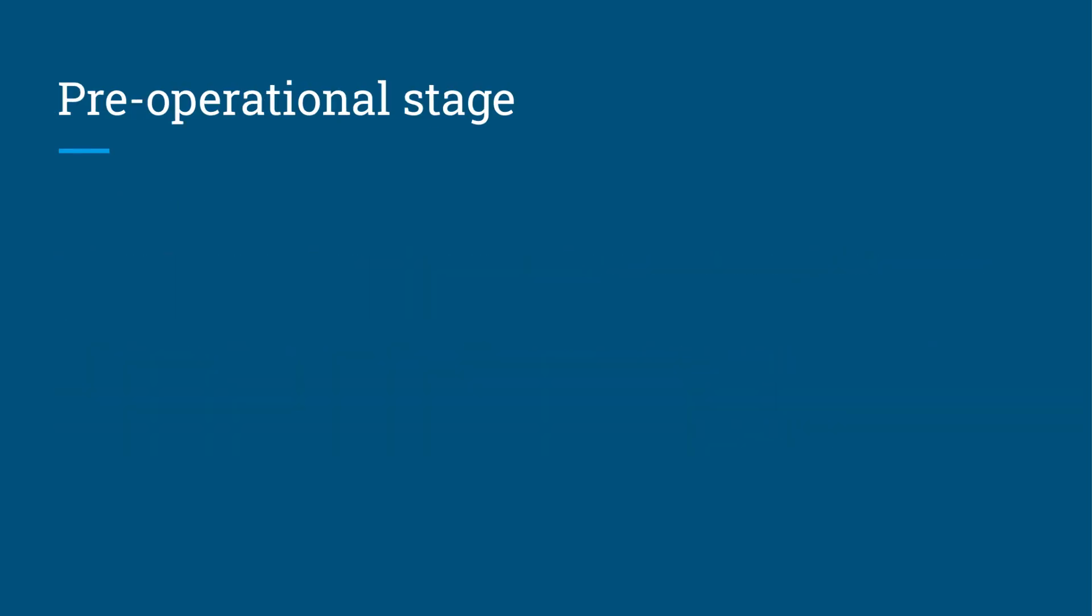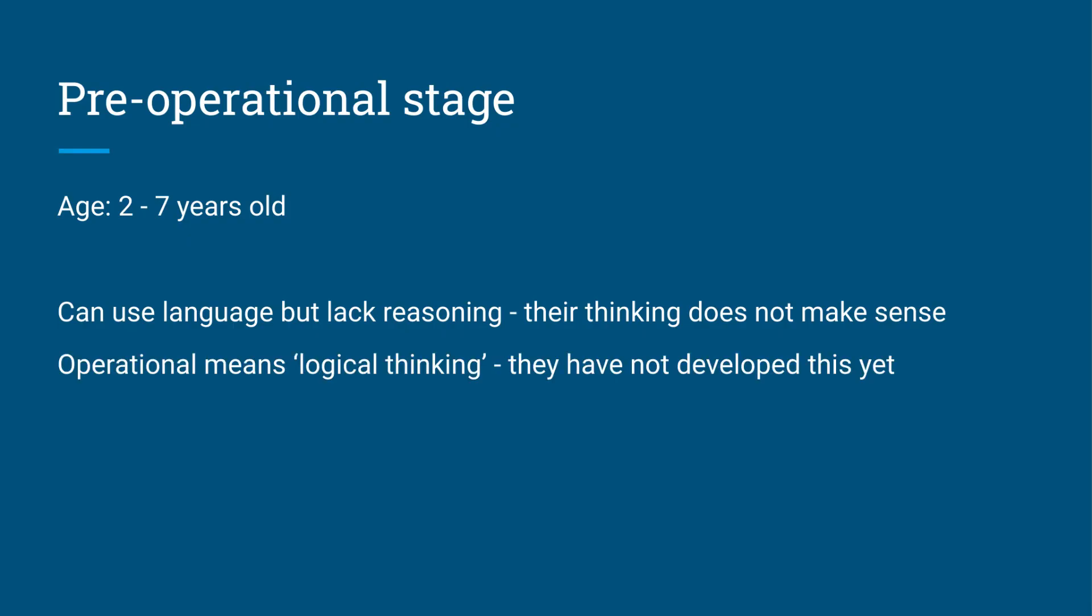The next stage is the pre-operational stage. This occurs between the ages of two and seven. In this stage, they can use language, but they lack reasoning. Their thinking doesn't really make sense. In the word pre-operational, we've got that word operational. Operational means logical thinking. They haven't quite developed this yet. That's why they're pre-operational.